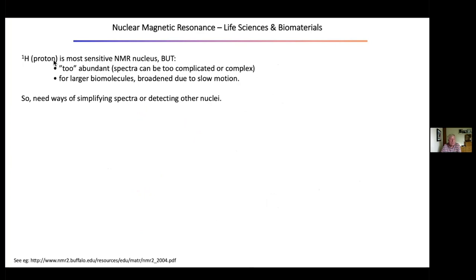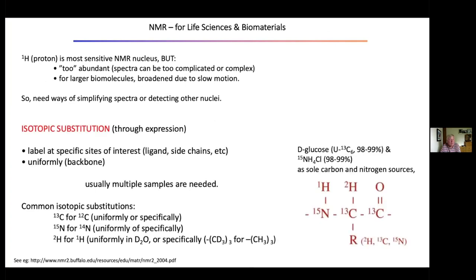Protons are the most sensitive NMR nucleus, but they are too abundant — the spectrum can be really complex and complicated to analyse. Large biomolecules are broadened due to slow motion within the magnetic field unless you use magic angle spinning. So we need ways of simplifying spectra or detecting other nuclei. Isotopic substitution can be used through expression to put in labels at specific sites of interest — chemically into a ligand, into side chains, or uniformly into the backbone of a protein.